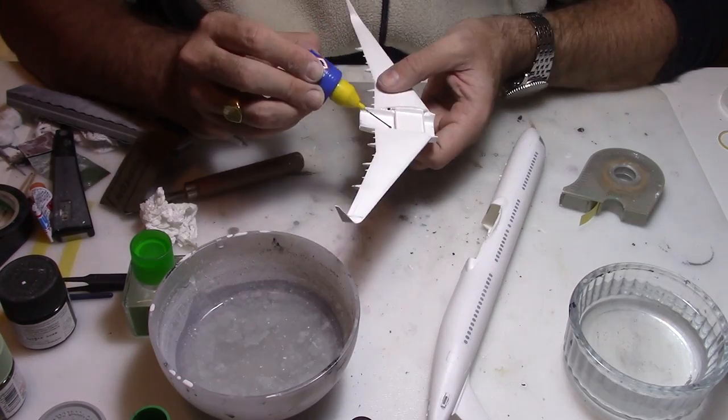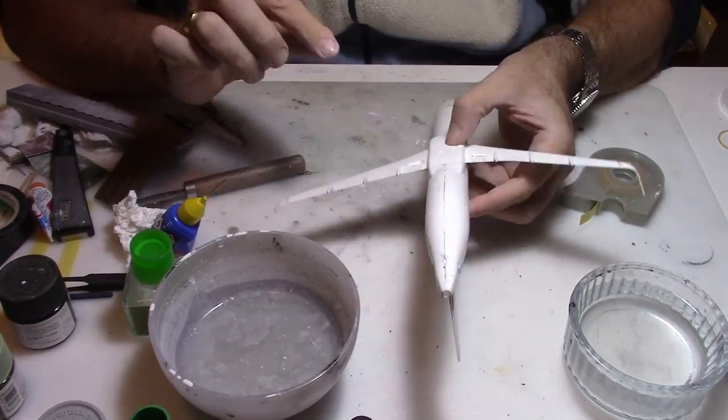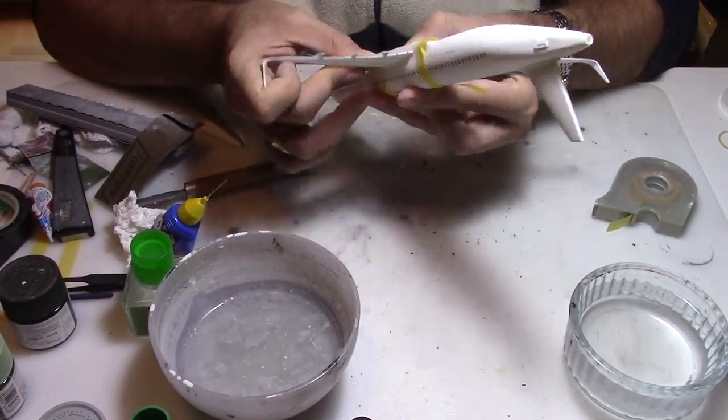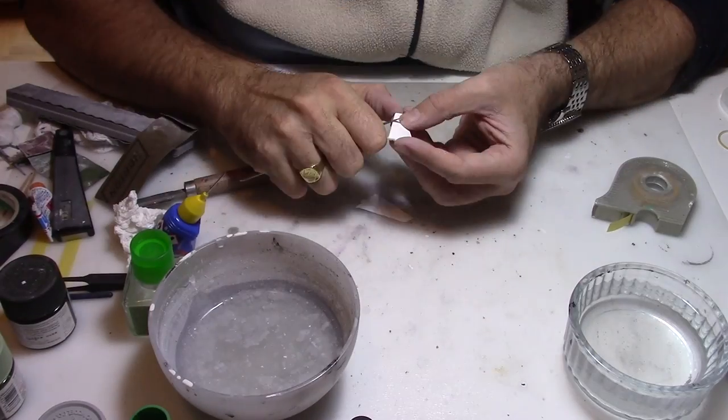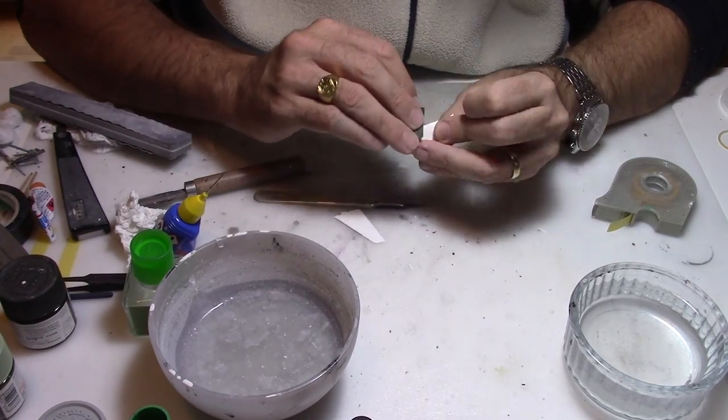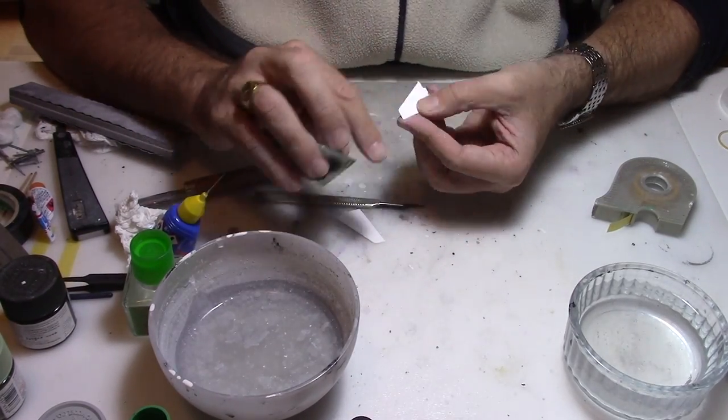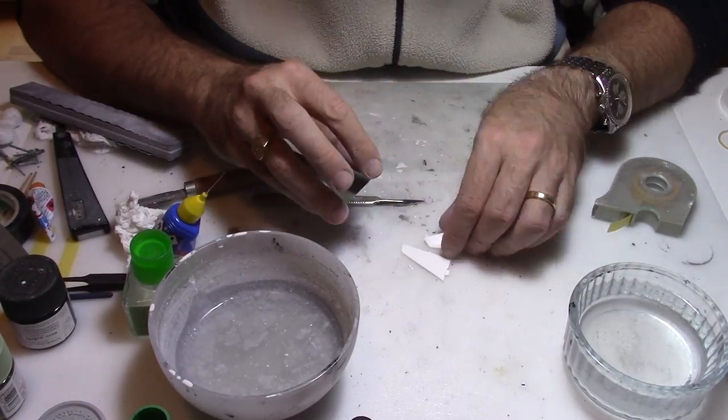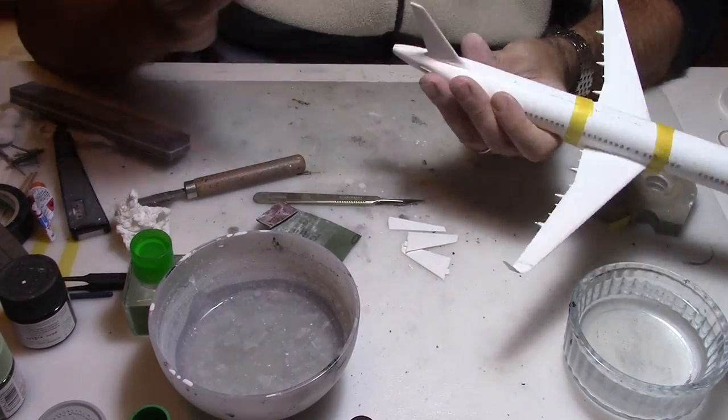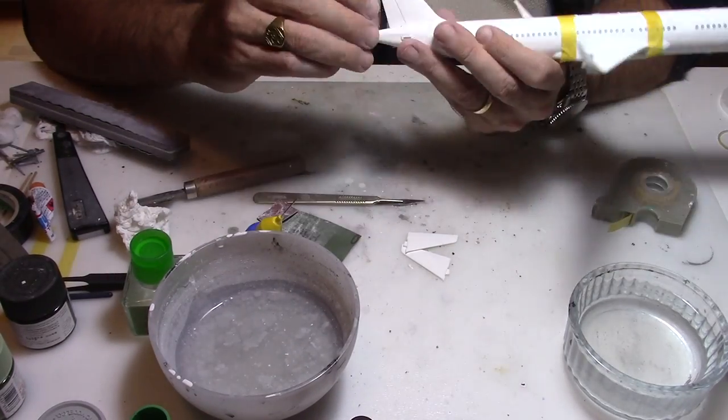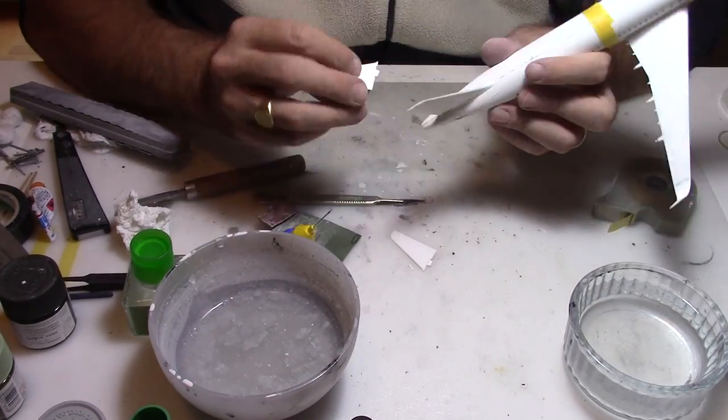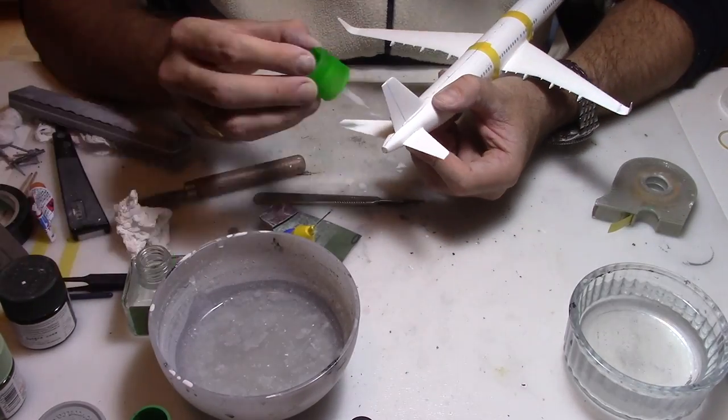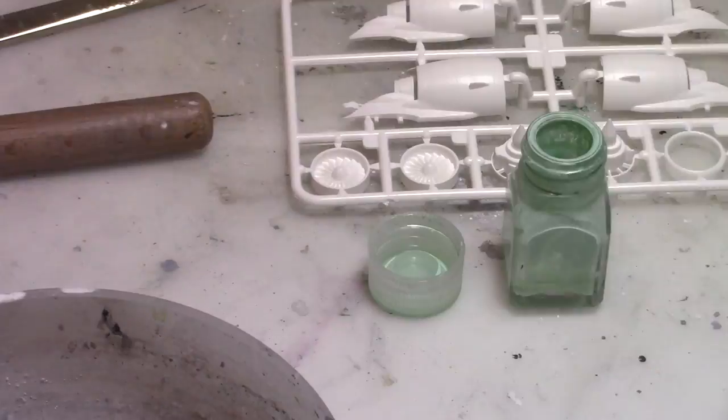After that we had to glue the wings to the fuselage. Once again I had a small fitting problem, so I used adhesive tape to get the proper shape. Then a bit of removing and preparing the parts for the horizontal stabilizer. We were able to glue the fin and then the horizontal stabilizer on the aircraft. There was also a little bit of fiddling to do.